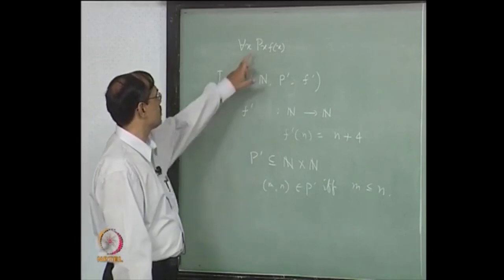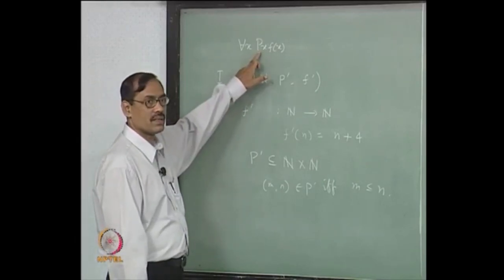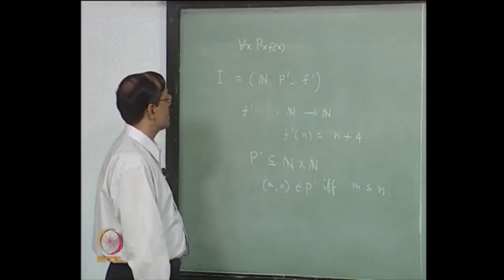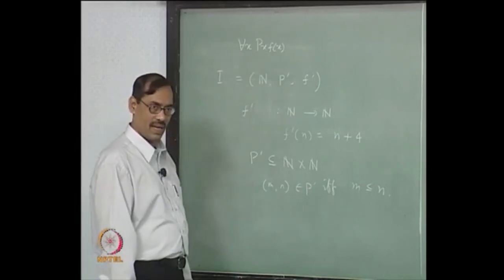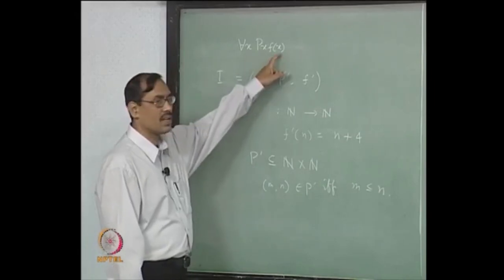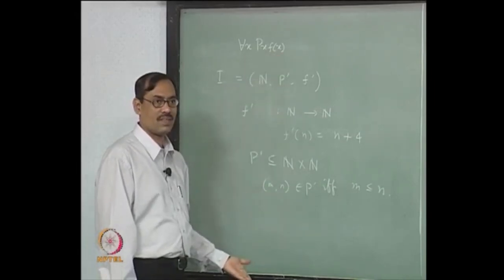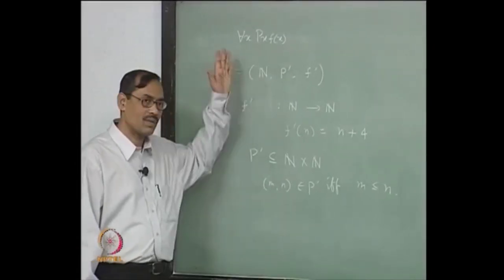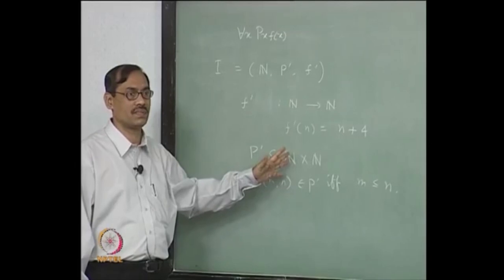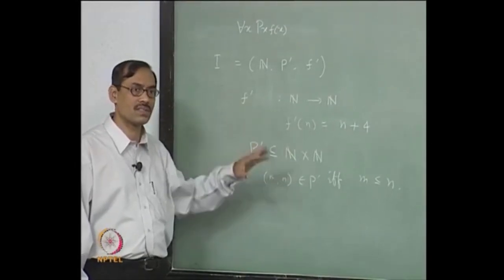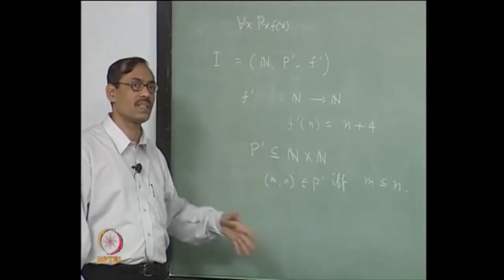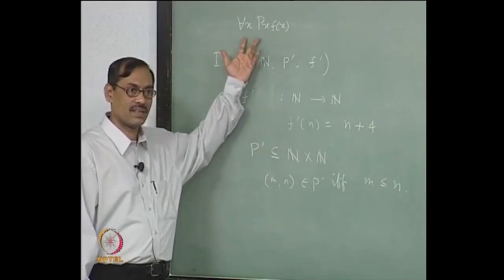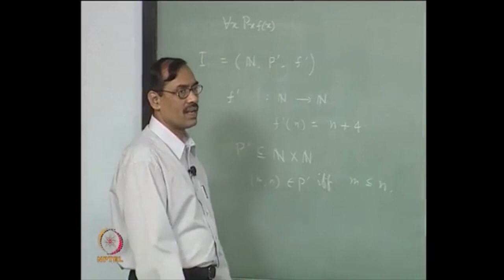Now we will see how this formula is interpreted under the given interpretation. Informally, it says: for every natural number n, n ≤ n + 4, which is clearly true. But let us look at how the formal semantics handles this, because we have to go through states and valuations to interpret the quantifier.